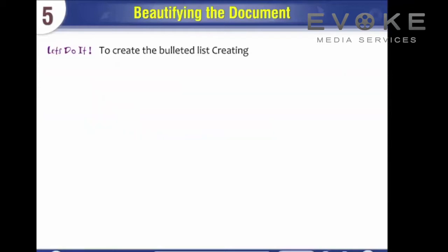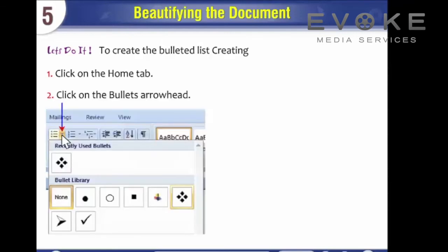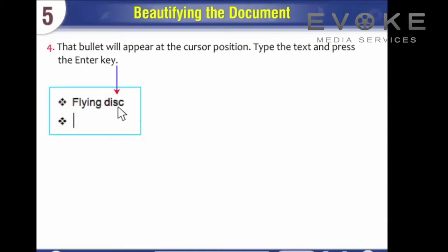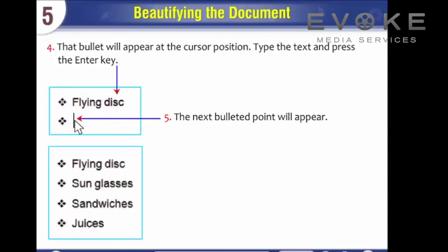To create a bulleted list, click on the Home tab, click on the bullet's arrowhead, and select the bullet type. That bullet will appear at the cursor position. Type the text and press the Enter key. The next bulleted point will appear. In this way, the bulleted list gets ready.